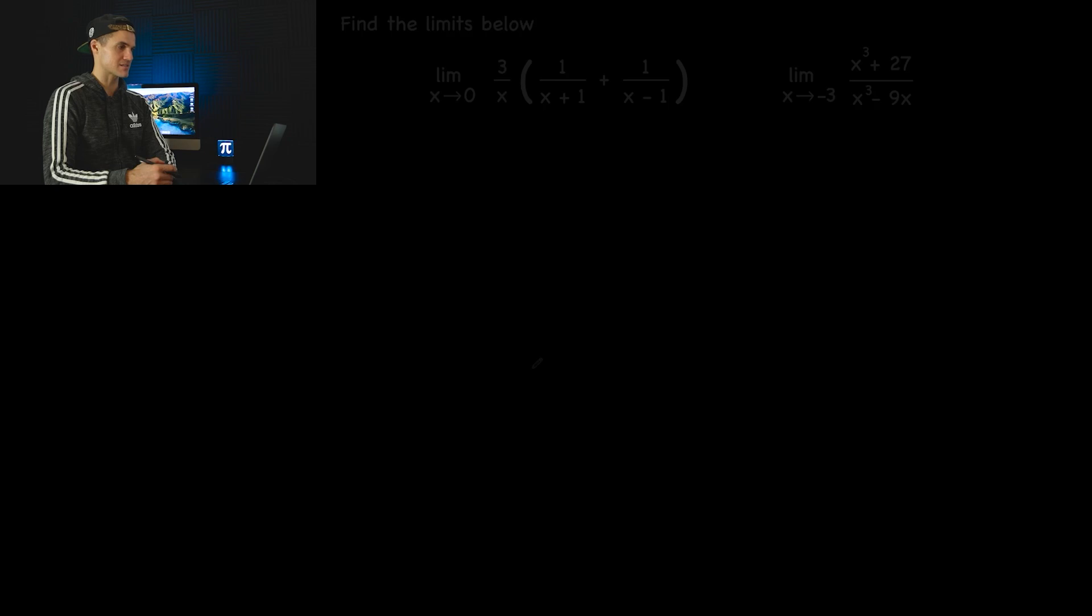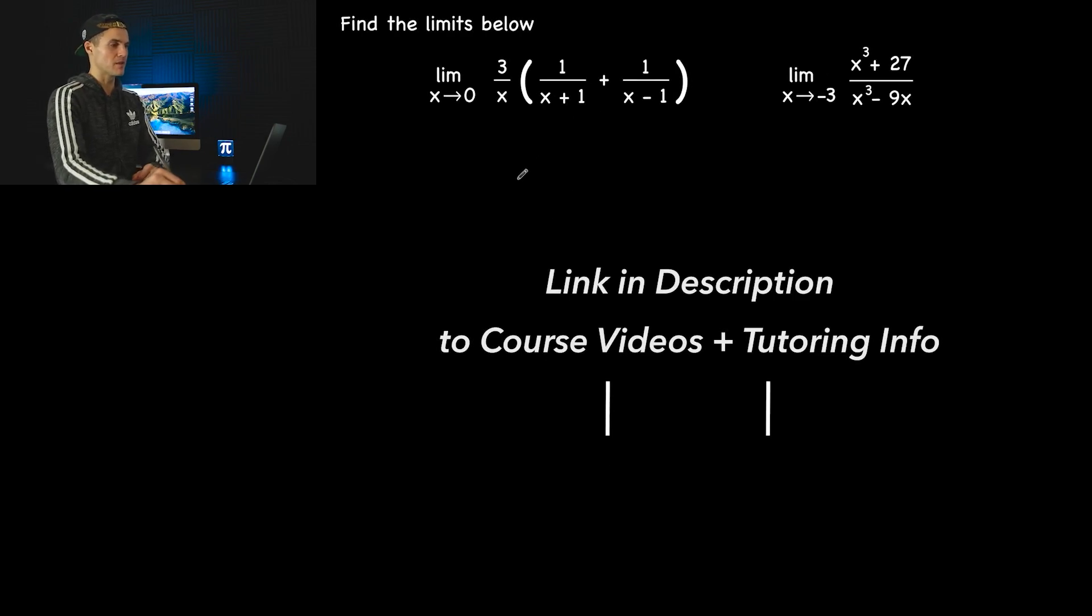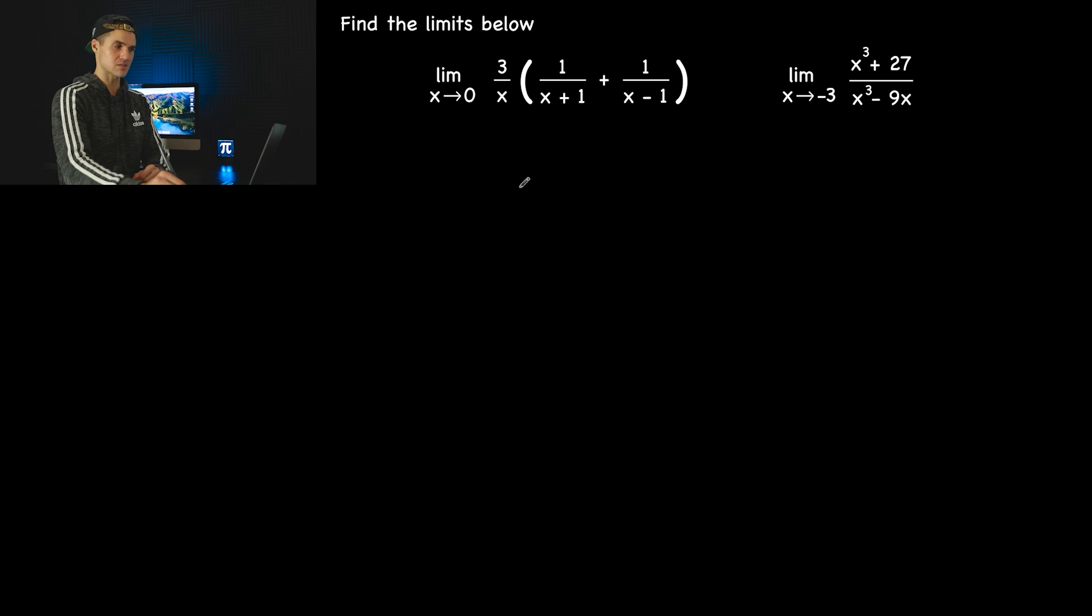Hey, what's up? Welcome back. Patrick here from All Things Mathematics, moving on to the next example on the test. We have to find these two limits. Starting with this first one, we've got the limit as x approaches 0 of 3 over x, and then in brackets, 1 over x plus 1 plus 1 over x minus 1.